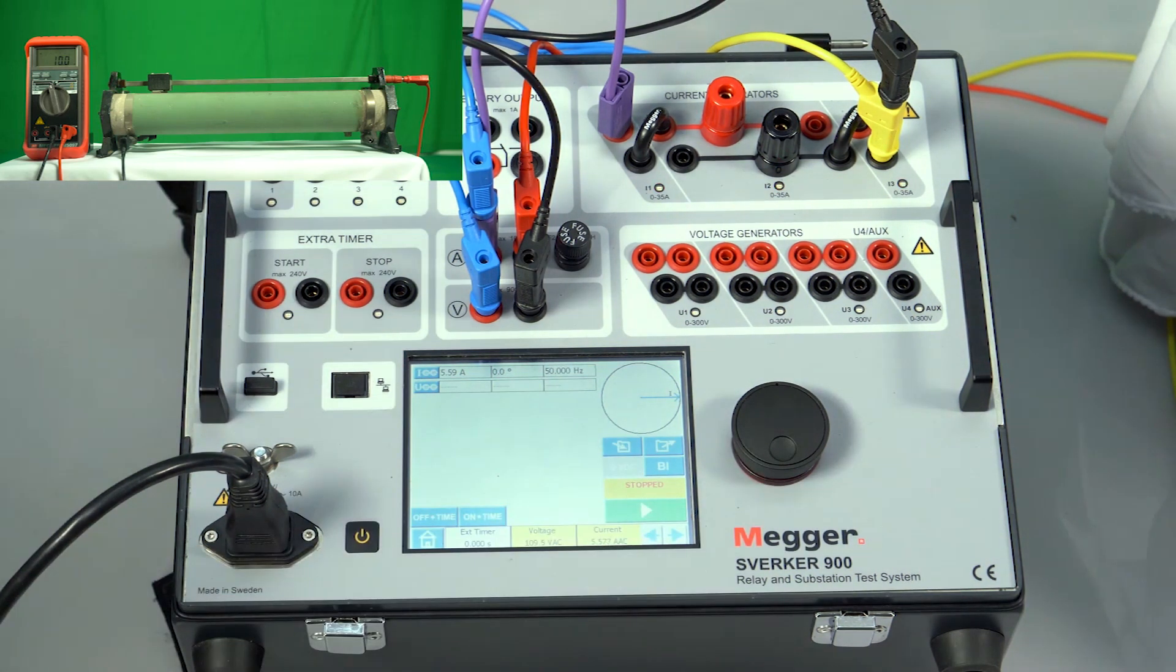The compliance voltage is 109.5. The current measured is 5.577. The resistance is 20 ohms, hence the power is 622 VA which is in line with the specification.